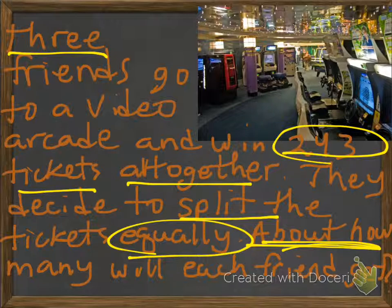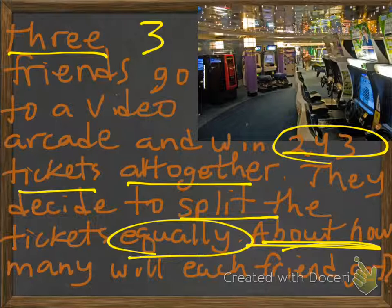About how many will each friend get? So again, we have three friends here, and they win 243 tickets altogether, and they decide to split it equally. So how many are each of them going to get? Let's take a look.